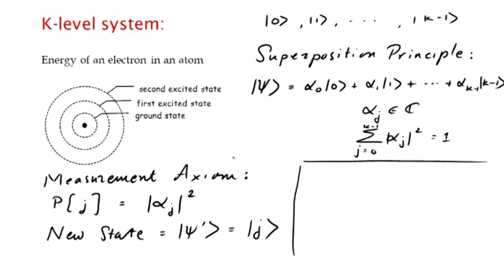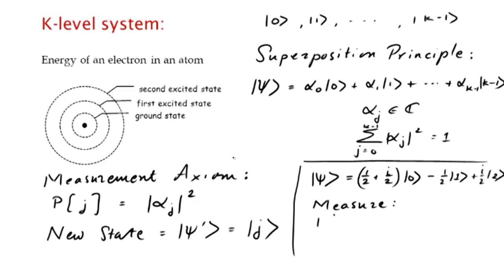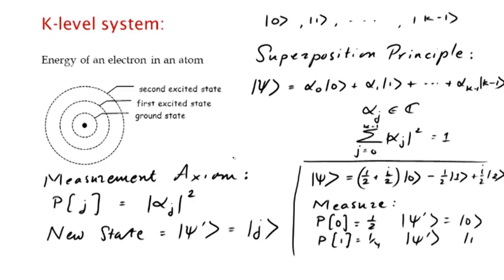As a quick example, if k equals 3, we have a 3-state system. We might have our state as: ket 0 with amplitude (1/2 + i/2), ket 1 with amplitude minus 1/2, and ket 2 with amplitude i/2. If we measure, the probability we see 0 is 1/2 and the new state is ket 0; the probability we see 1 is 1/4 and the new state is ket 1; the probability we see 2 is 1/4 and the new state is ket 2.